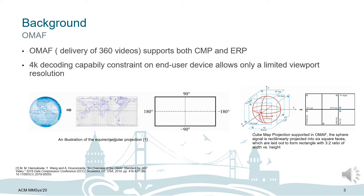Omnidirectional Media Format, or OMAF, is the first virtual reality system standard developed by MPEG, which defines a media format that enables omnidirectional media applications with focus on 360-degree video, images, and audio. It supports three degrees of freedom. OMAF specifies delivery of 360-degree video and supports ERP and CMP and their region-wise packing with 4K decoding capability constraints on end-user devices, which allows only limited viewport resolutions — lower than the resolution of many current head-mounted displays. An illustration of ERP is shown in the left figure, while the right figure shows the 3×2 cube map projection format.